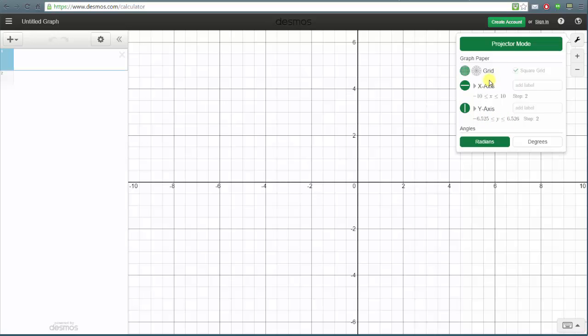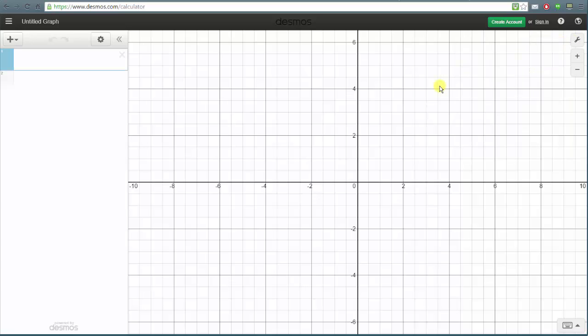Let's exit the settings by clicking on the wrench or just clicking on the coordinate plane and now we're going to go to the far left to box number one and enter the function.